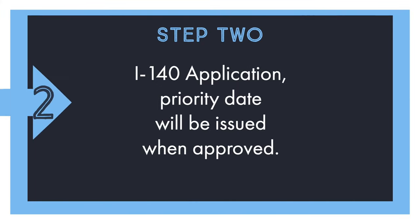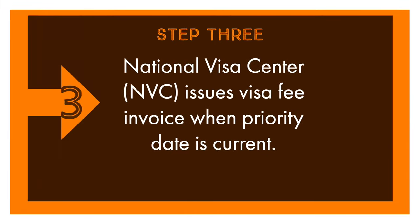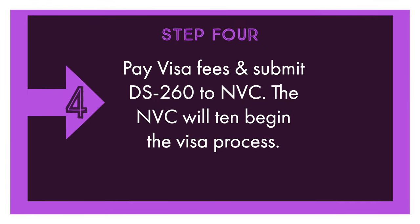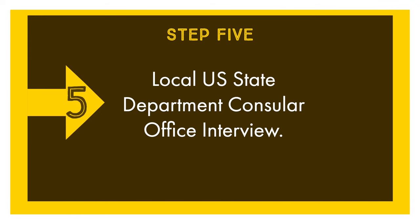Step 2: I-140 application. A priority date will be issued when approved. Step 3: The National Visa Center issues a visa fee invoice when the priority date is current. Step 4: Pay visa fees and submit DS-260 to the NVC. The NVC will then begin the visa process. Step 5: Local U.S. Department Consular Office interview.